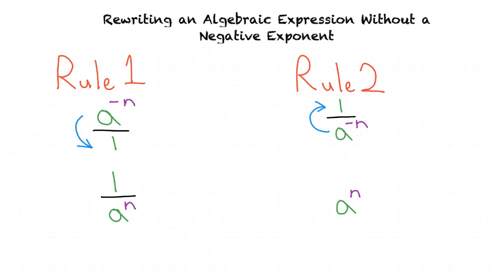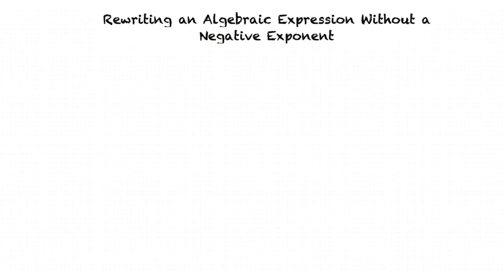I'm starting to get the concept, but could we go over some example problems? Of course! Let's start with the example problem, negative 4 times m to the power of negative 5.